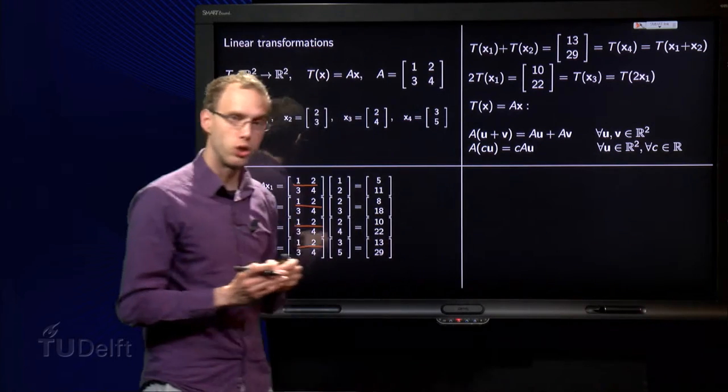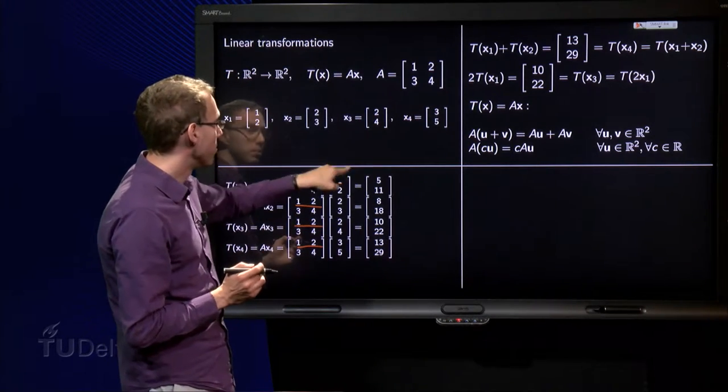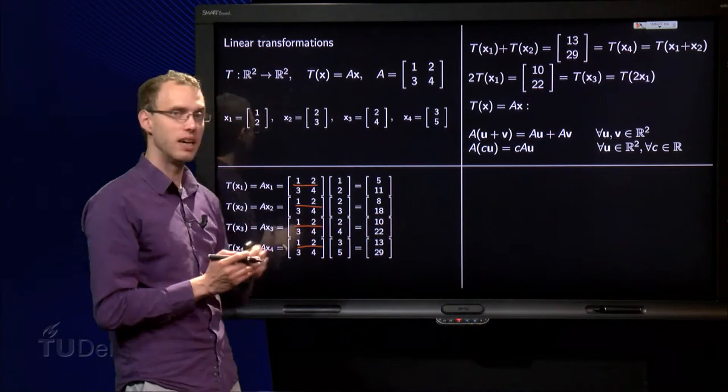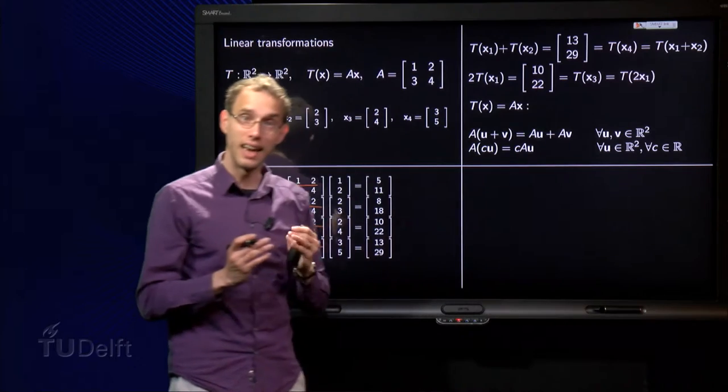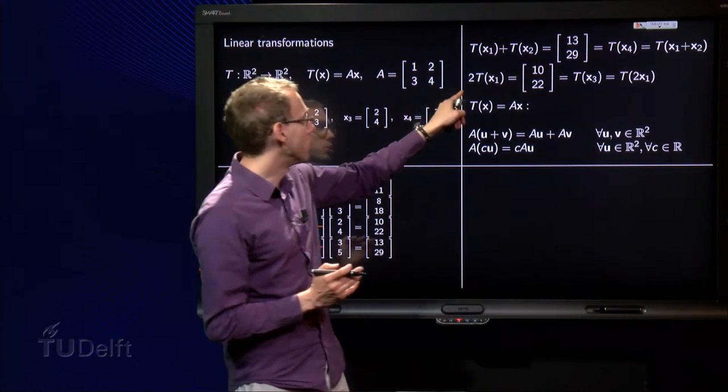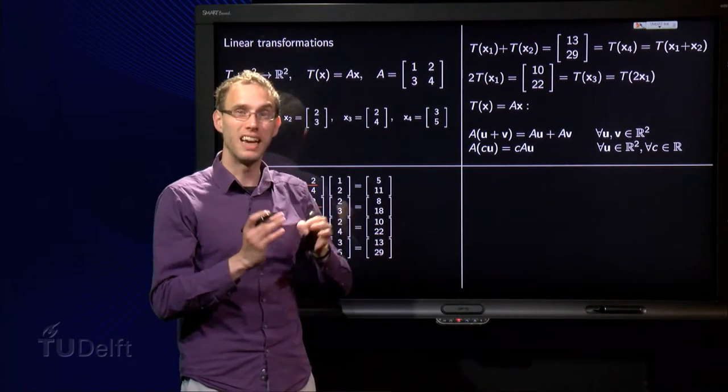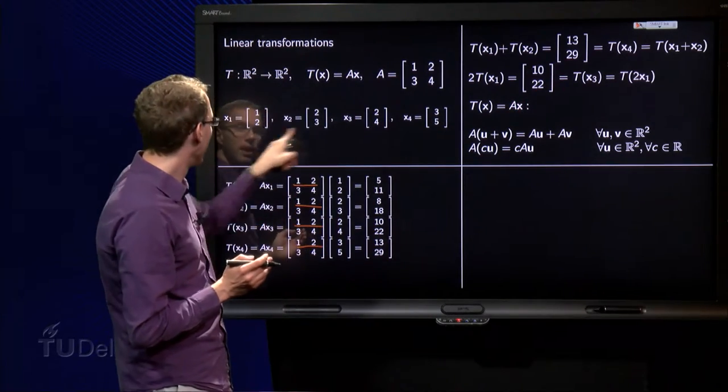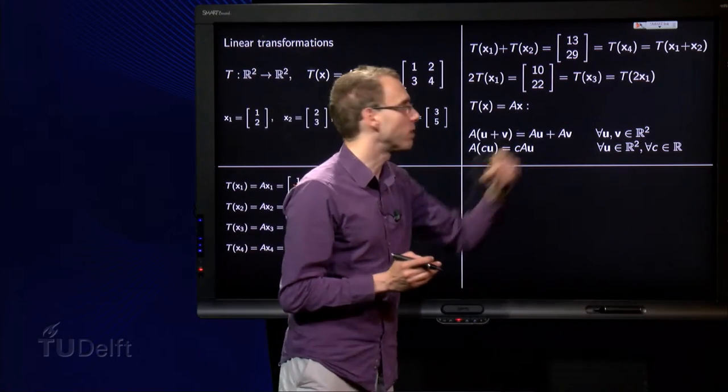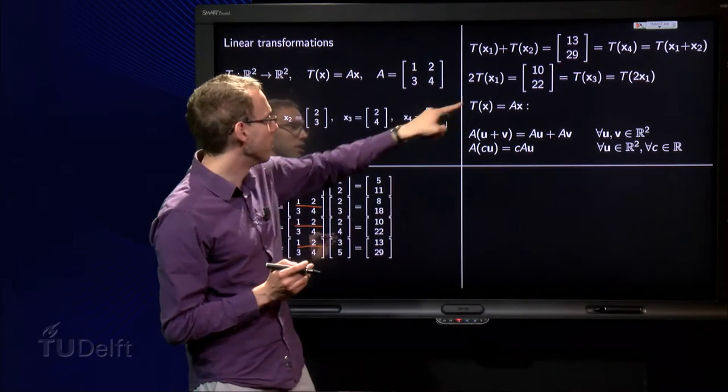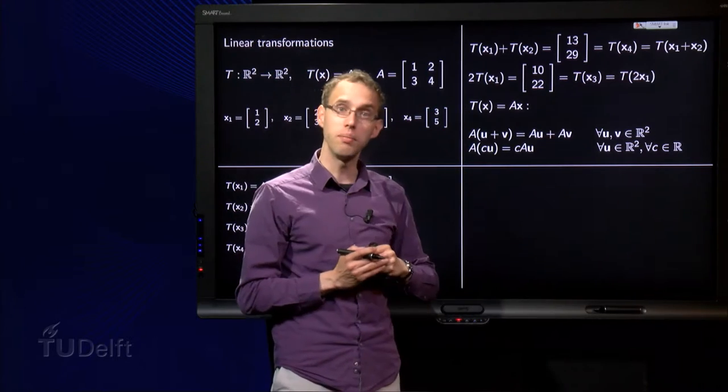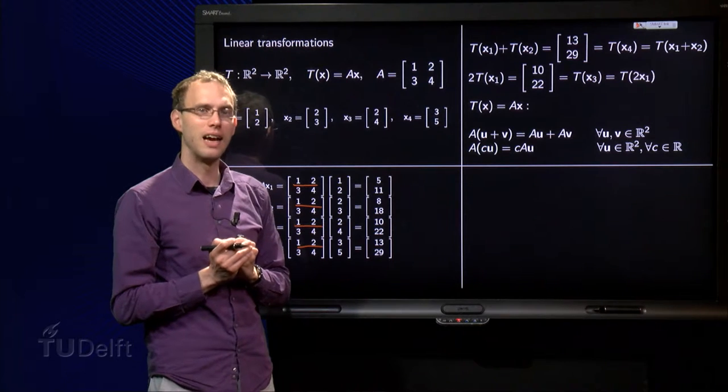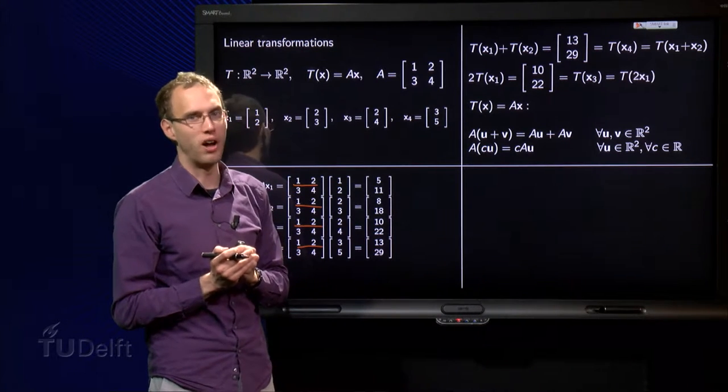Then we look at 2 times the image of x1. So 2 times the image of x1 equals 10, 22, and it happens to be exactly the same as this one, the image of x3. So 2 times the image of x1 happens to be exactly the same as the image of x3. And x3 happens to be 2 times x1. So that's a coincidence, 2 times the image of x1 equals the image of 2 times x1. Is that a coincidence? Well, of course not.